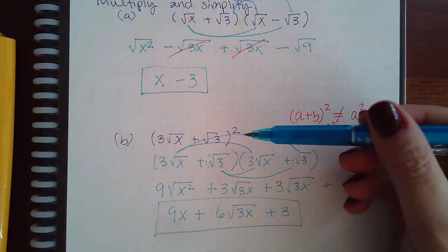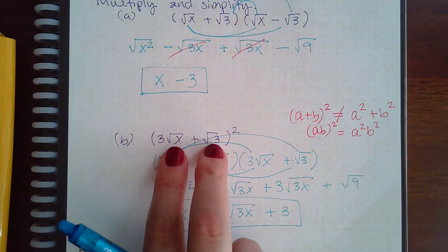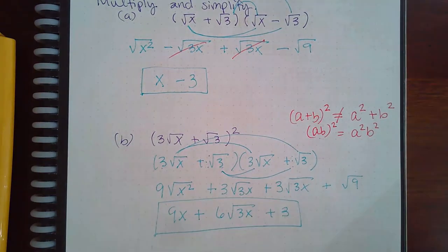So make sure when you see the square on a binomial, that you write the binomial twice, and then foil it.